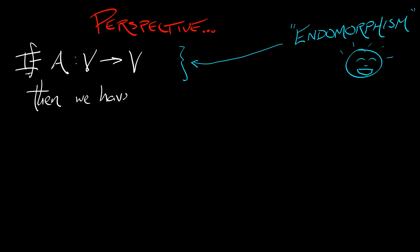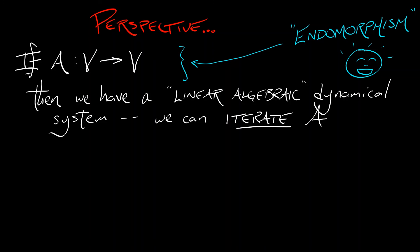Okay. If you have that, then you really have a linear algebraic version of a dynamical system. You can iterate A. Since A takes V to V, you can keep going. You can do it again. You could do it again. You could do it again. That's a dynamical system. You might think X equals AX, a discrete time dynamical system. X goes to A times X, which goes to A times A times X, which goes to A times A times A times X, et cetera, et cetera.